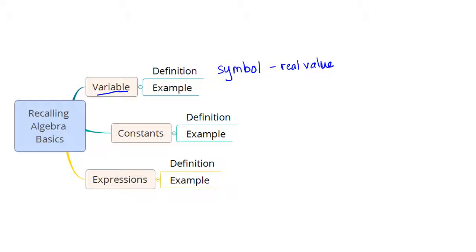Now, if you want to look at some of the examples of variables, we usually use small case letters of the alphabet to represent variables. For example, x is a variable, y is a variable, z is a variable, t is also an example of a variable.